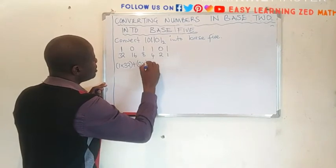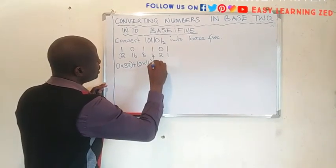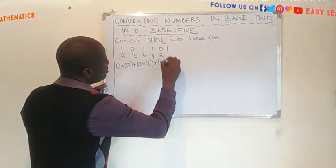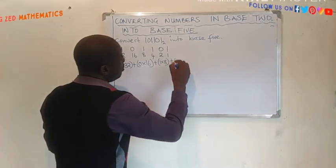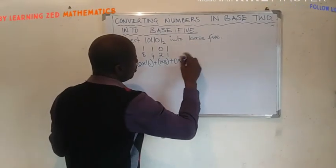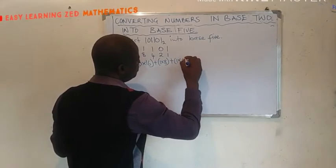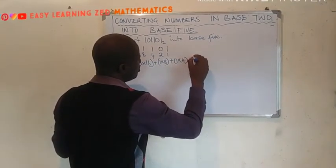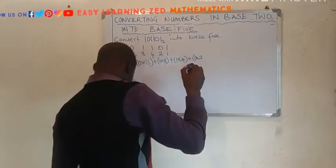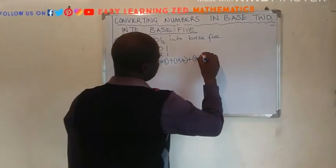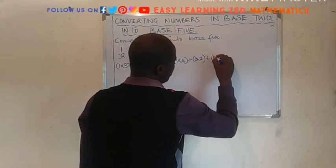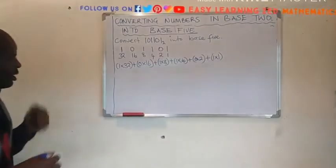Plus 1 times 8, plus open brackets, 1 times 4, plus 0 times 2, then plus 1 times 1. Okay, all right.